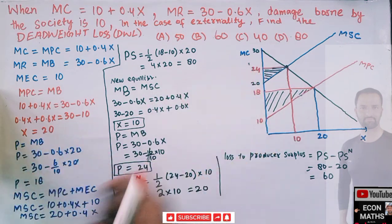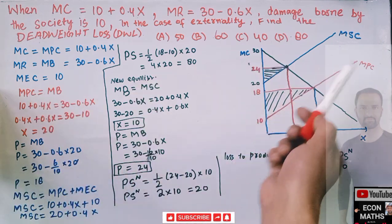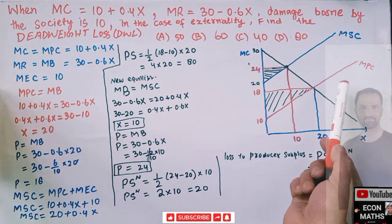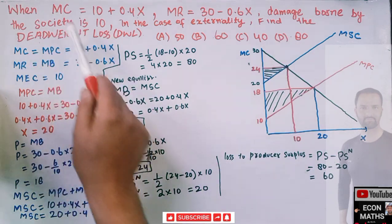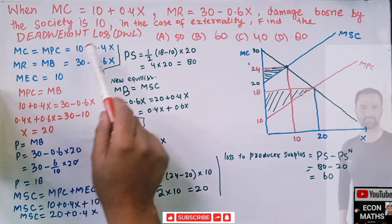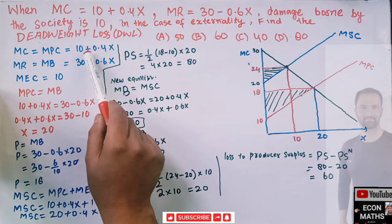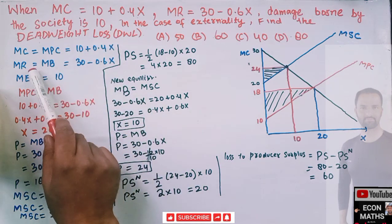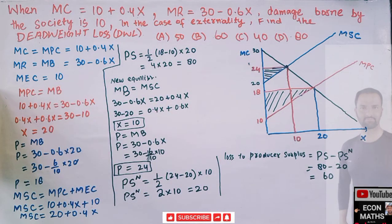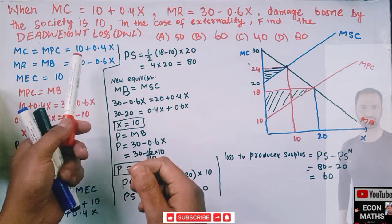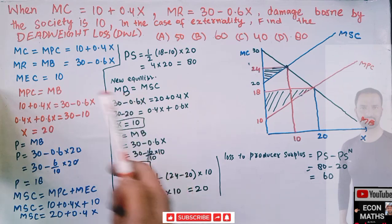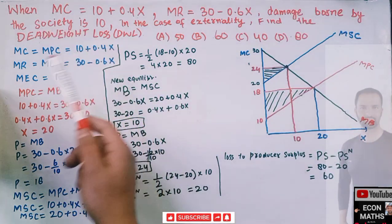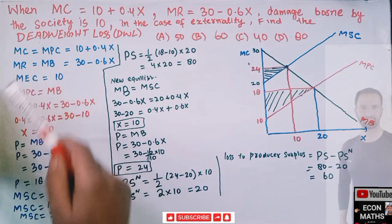Let's recapitulate how we arrived at this graph. First, we were given the marginal cost, which denotes our marginal private cost, given as 10 plus 0.4X. Our marginal revenue will be our marginal benefit curve, given as 30 minus 0.6X, where X is the output produced.